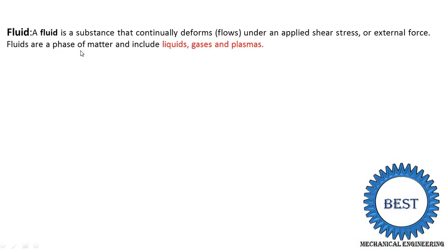What is a fluid? The fluid is a substance that continuously deforms under applied shear stress or external force. Fluid is generally of three types: it may be liquid, it may be gas, and it may be plasma. Liquid means water, oil, or any other liquids. Gas means it may be air, carbon dioxide, nitrogen, argon, or a number of other gases. And the third type is plasma.